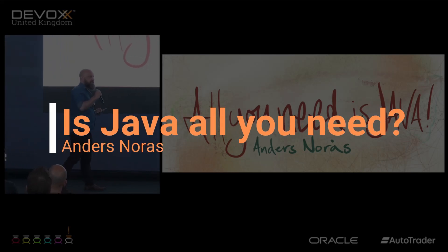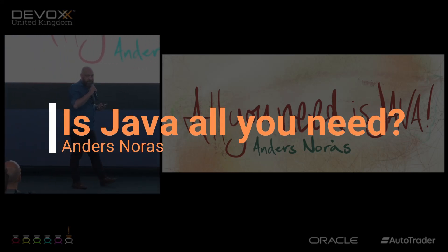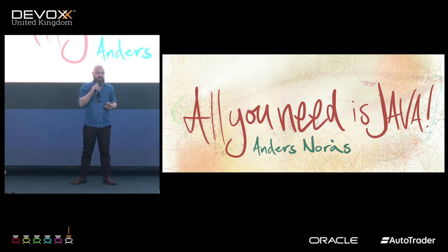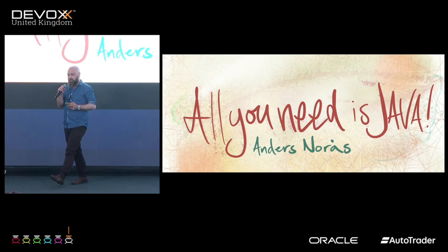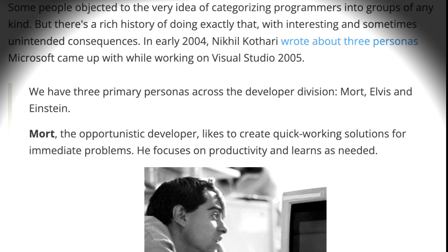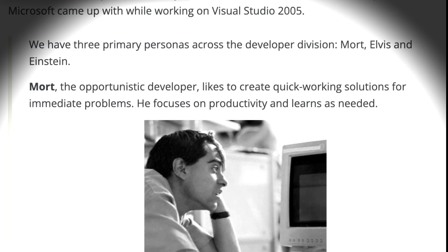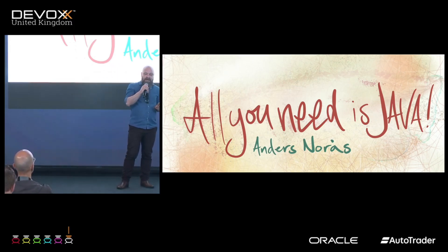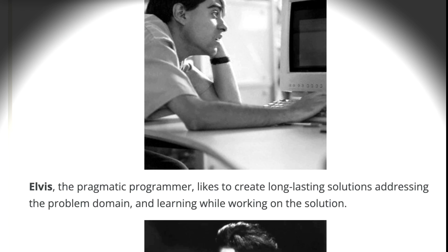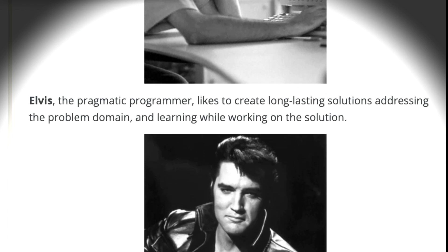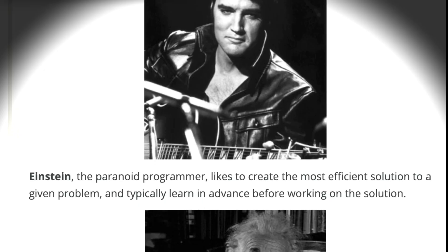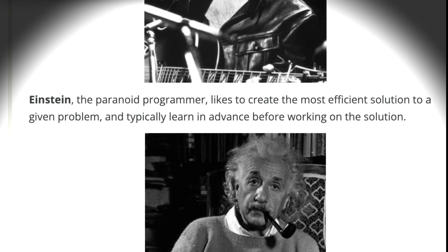When Microsoft, back in 2008, were creating a new revision of Visual Studio, they defined some developer personas that Microsoft Research had come up with. They were Mort, who was the everyday programmer who just wanted to get the job done, learning on the job while figuring things out. Then you had Elvis, who was the creative programmer who wanted to build solutions for the ages. And finally you had Einstein, who would like to invent great things.